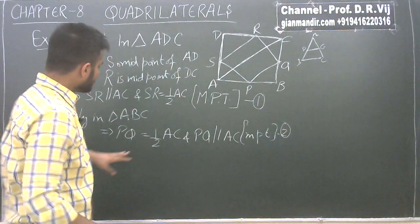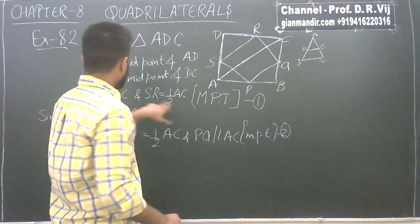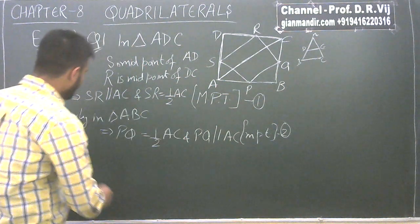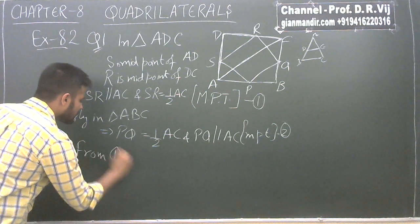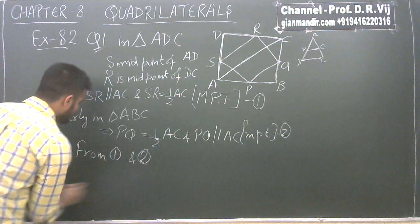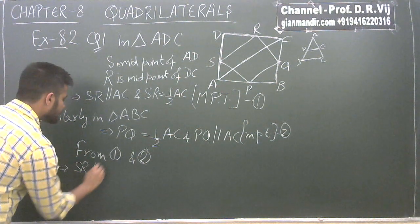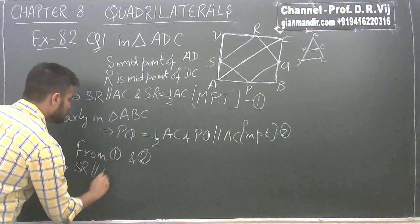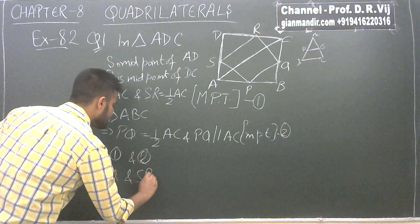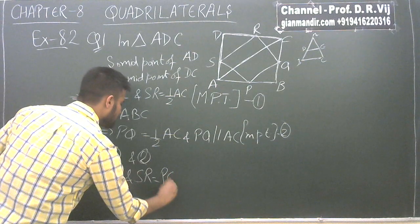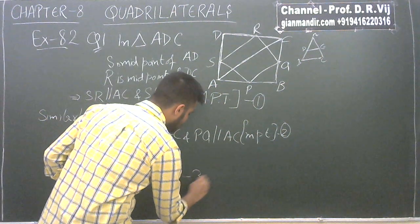Now from statements 1 and 2, both sides are parallel to AC and half of AC. So from 1 and 2, we can say that SR is parallel to PQ and SR is equal to PQ. We will take this as statement 3.